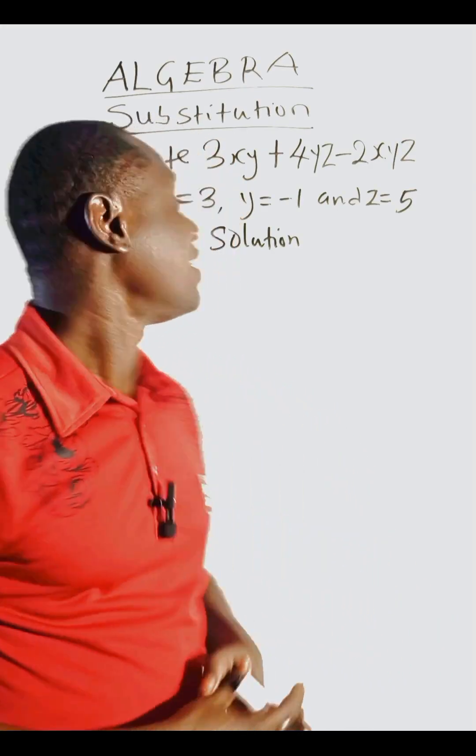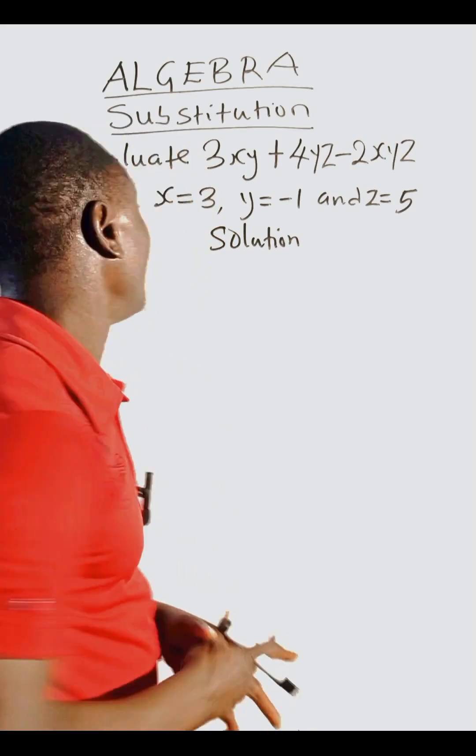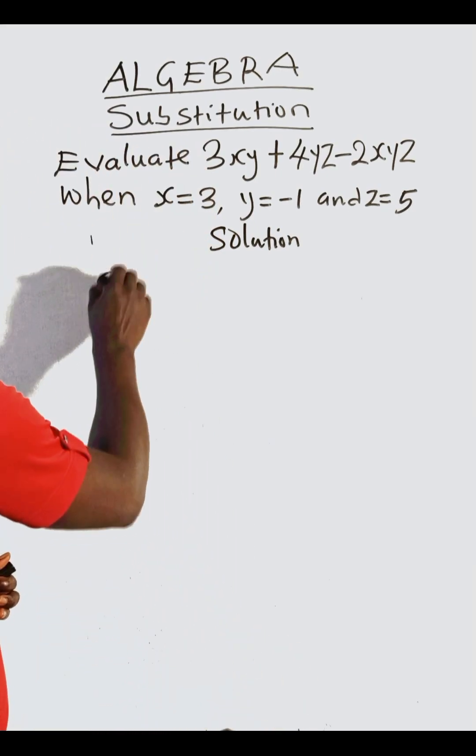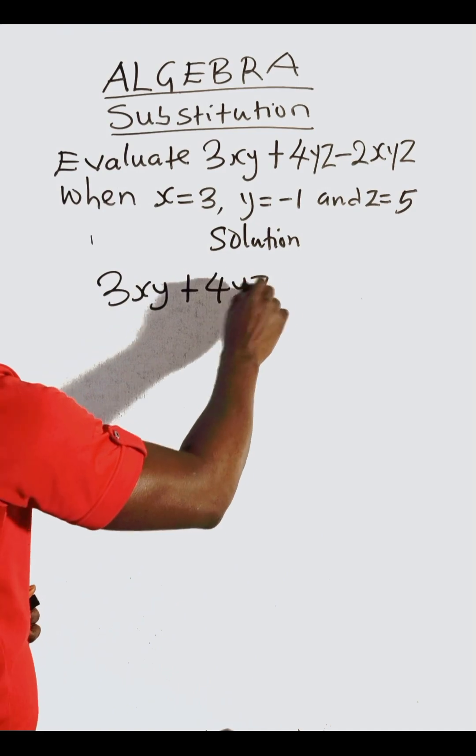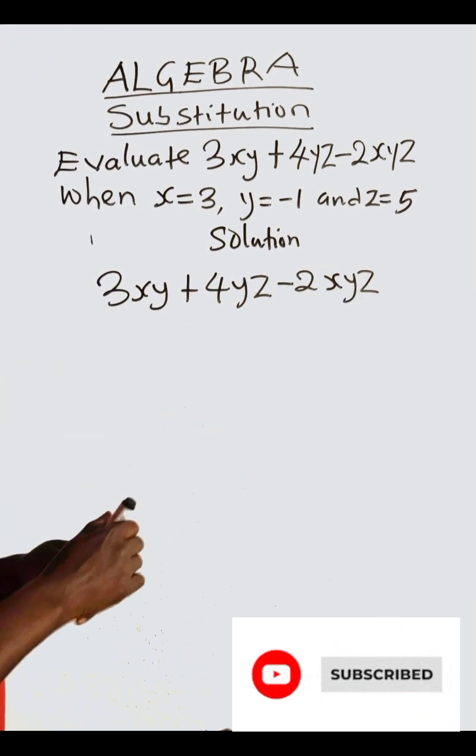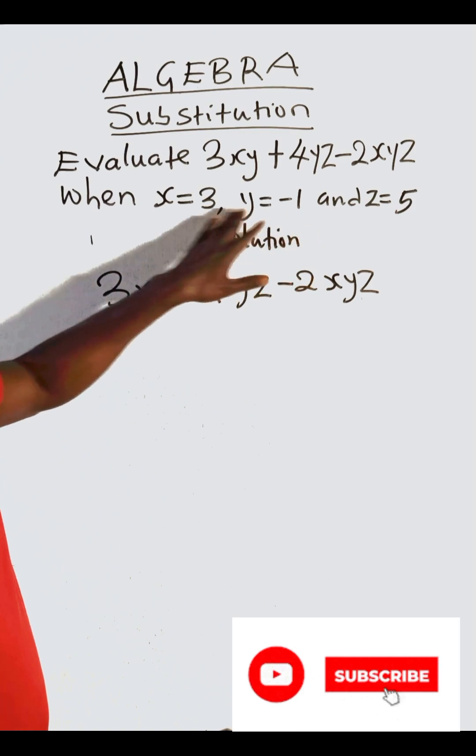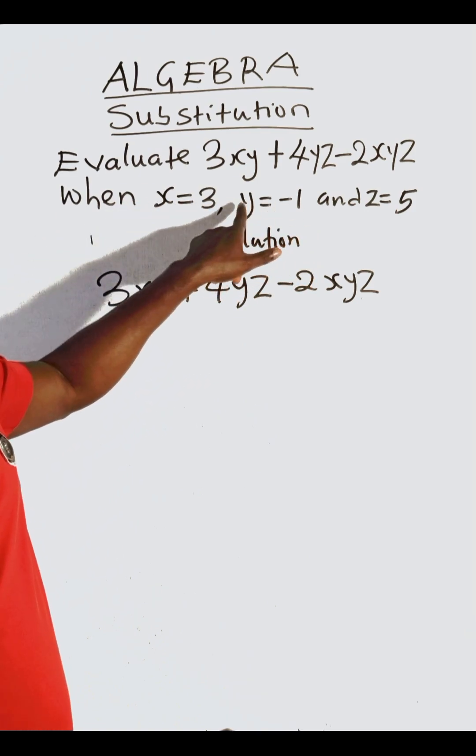Hello, welcome back. Let's have this problem on substitution. We have 3xy + 4yz - 2xyz. Remember we have substitutes here: three will substitute x, minus one will substitute y, and five will substitute z.